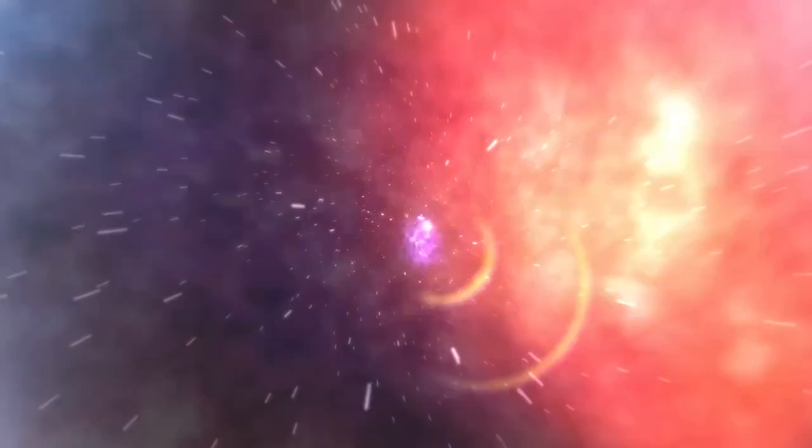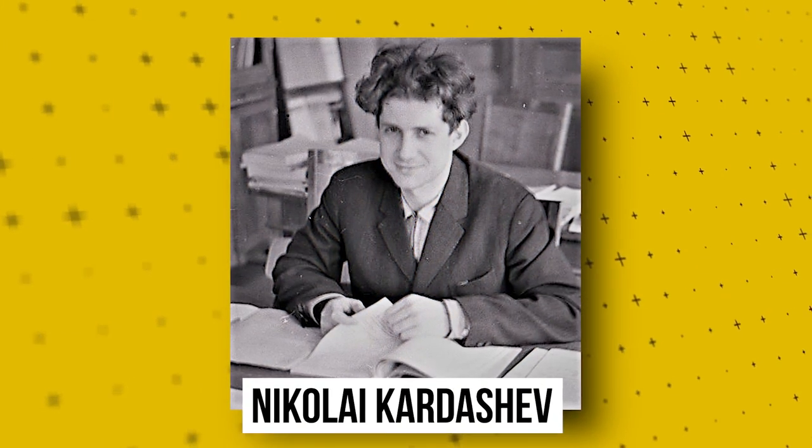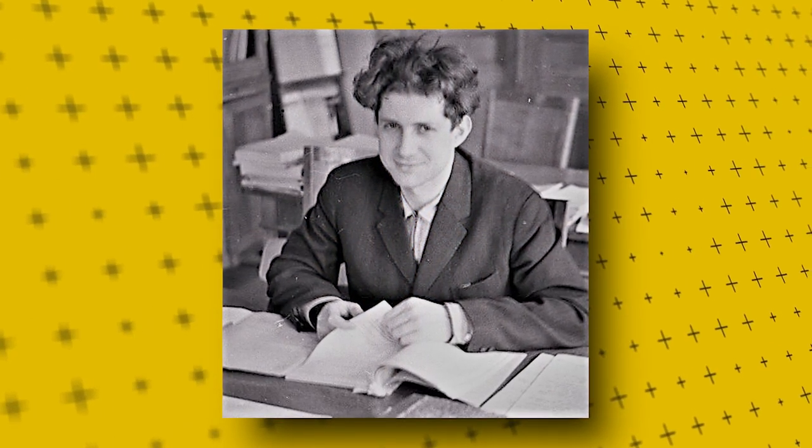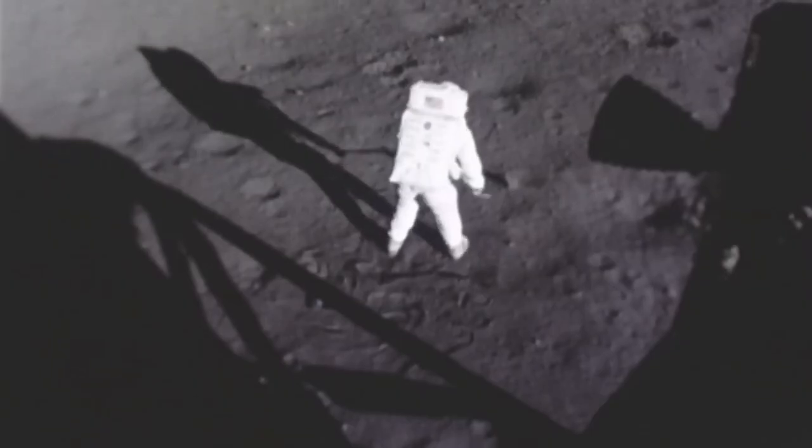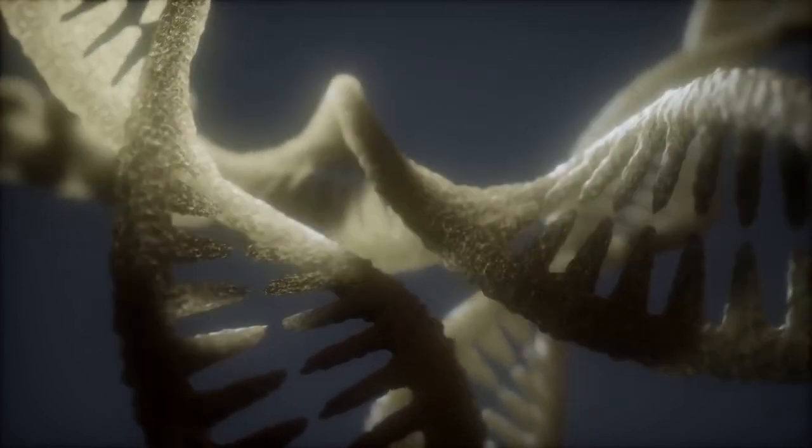The Kardashev scale is a classification system for hypothetical civilizations that exist beyond our own planet. Nikolai Kardashev, a Russian scientist, came up with the initial concept for the scale in 1964, who was looking for signs of extraterrestrial life within cosmic signals.